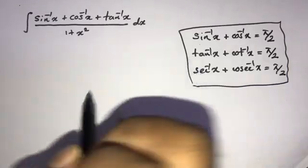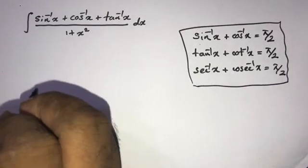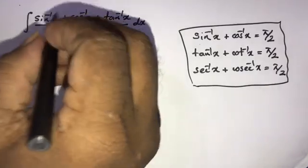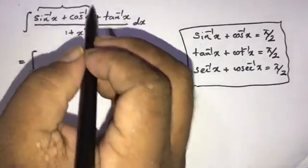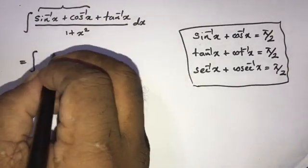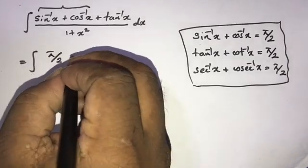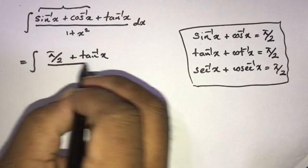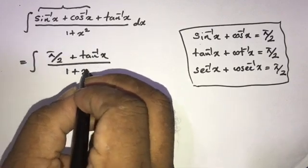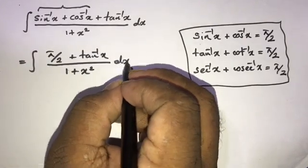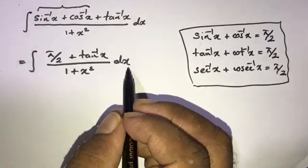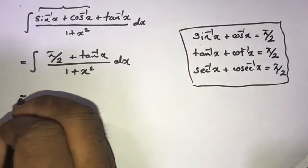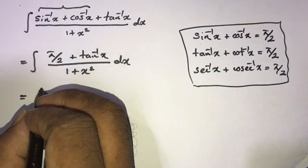Using this, we can rewrite the problem. Sin inverse x plus cos inverse x equals π over 2, so we can substitute tan inverse x. The integrand becomes π over 2 plus tan inverse x, all over 1 plus x squared, times dx. According to integration rules, we can rewrite this as two separate integrals.